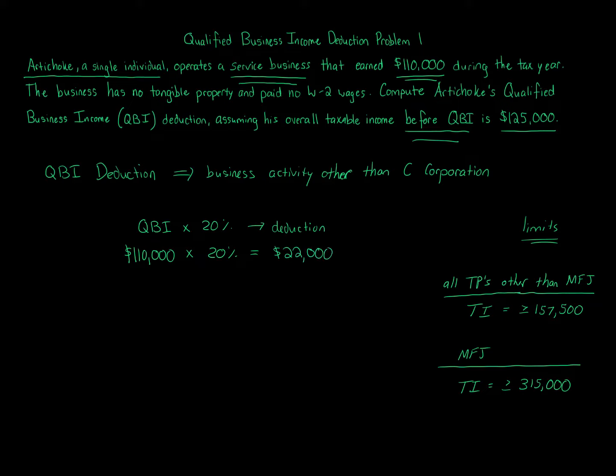Get your calculators out and calculate. $22,000, and that is the amount of deduction. So the question is asking, compute artichokes qualified business income deduction. It's going to be $22,000 is the answer.